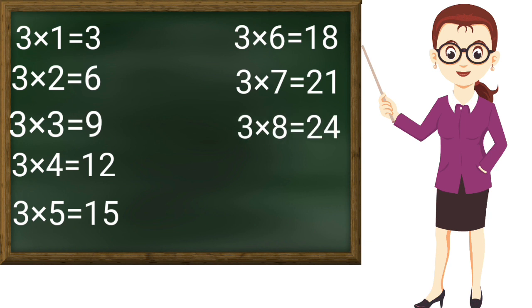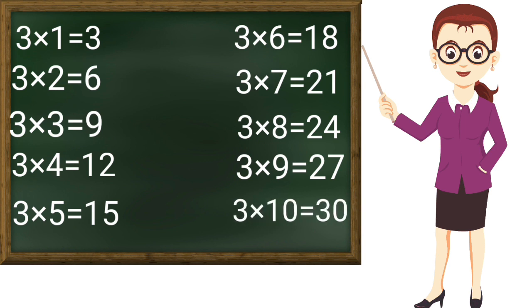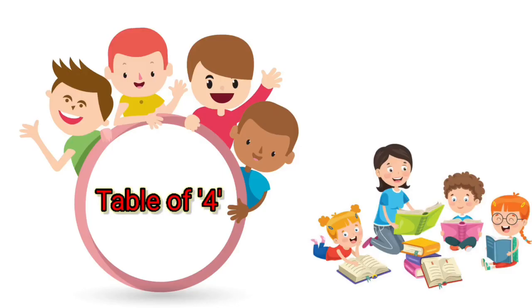3 eights are 24, 3 nines are 27, 3 tens are 30. Wow! Thanks ma'am. Now table of 4.